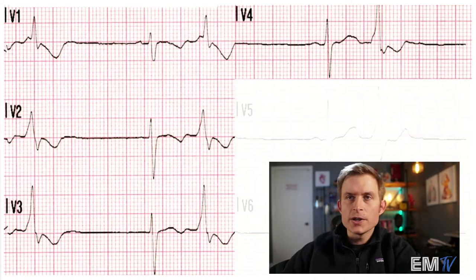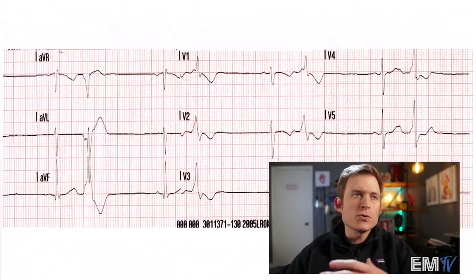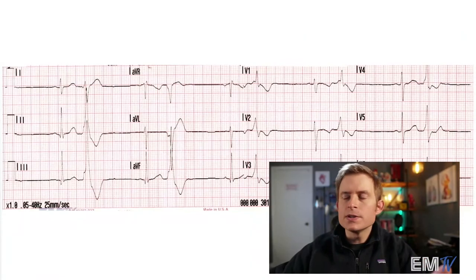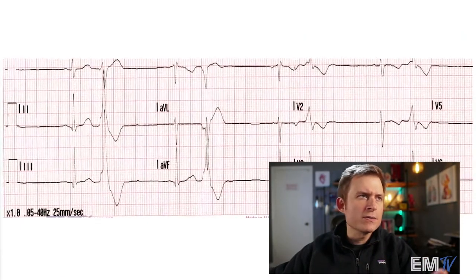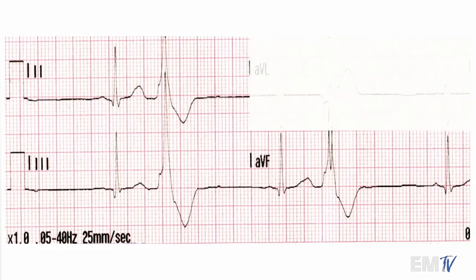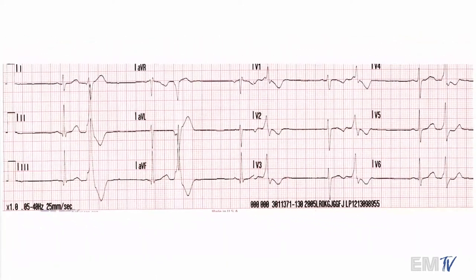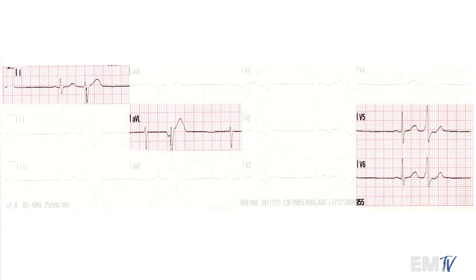Let's look at the next lead grouping — the inferior leads: leads 2, 3, and AVF. Just quickly eyeballing it, I'm not seeing any ST segment elevation; all of these begin at the isoelectric line, nothing on the inferior side. Our lateral lead groupings show the same — no ST segment elevation or depression here.